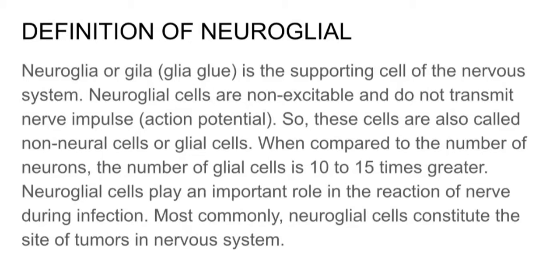Neuroglia cells play an important role in the reaction of nerves during infection. Most commonly, Neuroglia cells constitute the site of tumour in the nervous system. So this is all about the definition of Neuroglia.